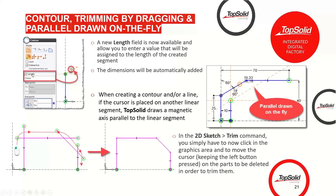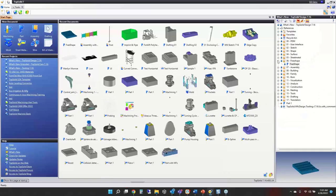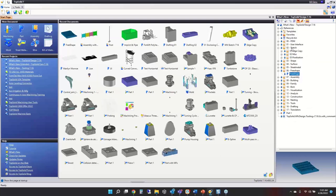When you're sketching a contour you can type a length in and it will automatically dimension it once you place the second point. The second option is: while sketching a contour, you can hover over another segment to borrow or automatically create an axis that's parallel to it, so you can sketch dynamically parallel to that object.